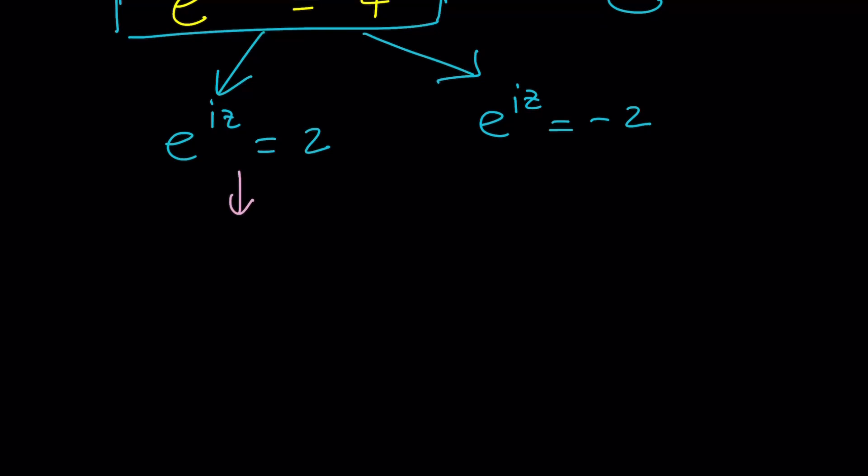I can go ahead and maybe natural log both sides or write the two in complex form. Let's complexify the two, shall we? Let's go ahead and write this as follows. E to the 2iz. I mean, e to the iz. Sorry. I'm going to use the version here. Here is 2 times e to the power 2 pi and i. Nice.